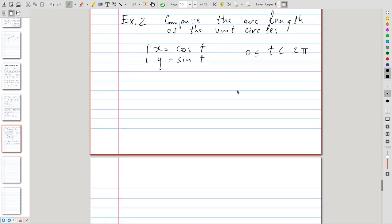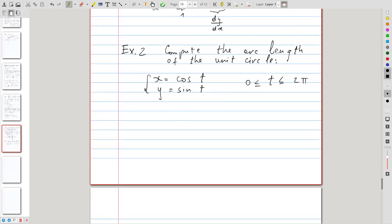So, then, we'll get, for the arc length, the following integral: the integral from 0 to 2π of the square root of (dx/dt)² plus (dy/dt)², integrated with respect to dt.